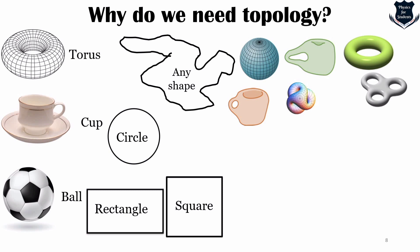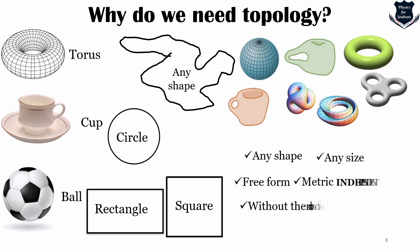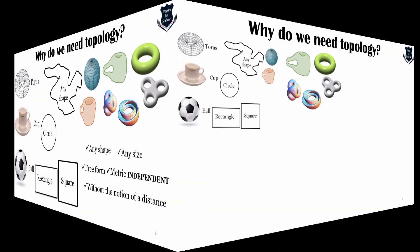The basic idea is that these shapes can take any form, any size — it becomes a free form. I can change these structures into anything. It becomes metric-independent, which is the most important part. That means I do not have to measure distances or angles on a particular metric such as meters or centimeters — the metric becomes independent. This idea of being without the notion of distance will be made clearer in the next part of the video.